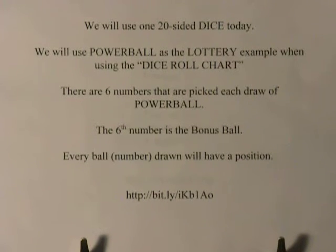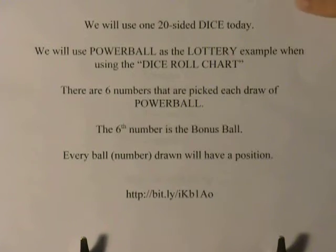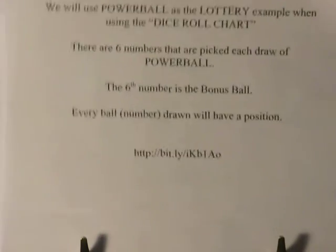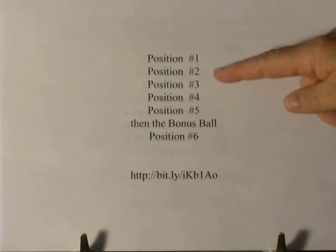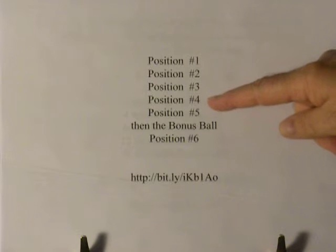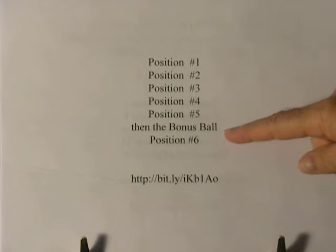Every ball or number drawn will have a position. We'll call these position one, position two, position three, position four, position five, and the bonus ball will be position six.